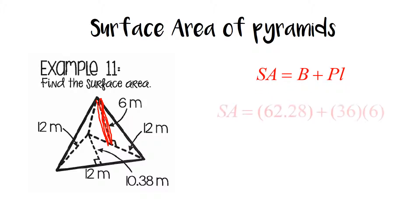So we're going to use our formula. So if we take 1.5 times 10.38 times 12, we get the area of the base is 62.28. Plus, if we add up 12 plus 12 plus 12 for the perimeter, we get 36 times the slant height, 6, gives us a total surface area of 278.28 meters squared.